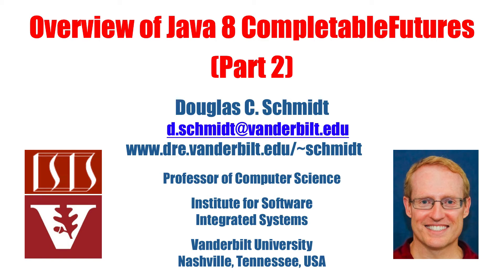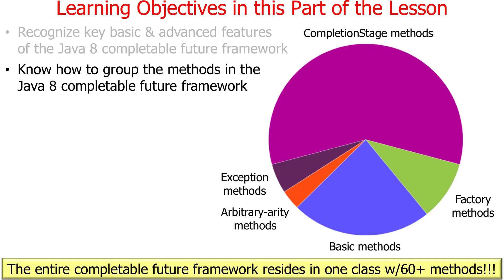Let's talk about the second part of CompletableFutures, where we'll go in more detail about how all those methods get grouped together in the CompletableFutures framework. Remember, they all come through the CompletableFutures class, which has over 60 methods in it, which is pretty daunting at first. But when you break it down, you see that those methods fall into different categories. We have completion stage methods, which are the bulk — probably around 40 or so.